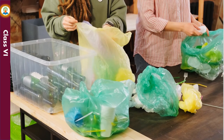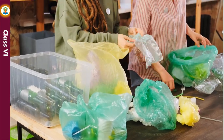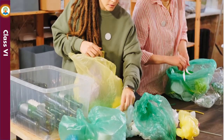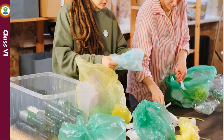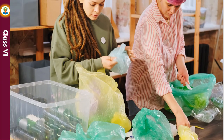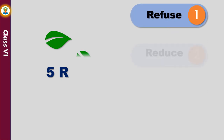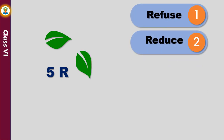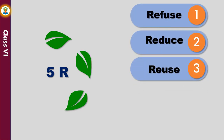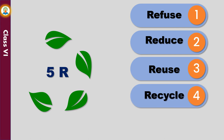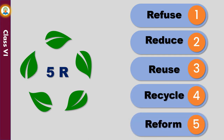Once the waste is segregated into different types, we need to know how to handle them so that they are less hazardous to all living creatures. Waste management strategy has always propagated the use of 5Rs: Refuse, Reduce, Reuse, Recycle, and Reform.